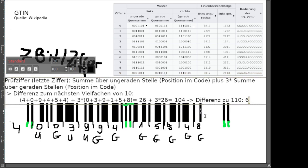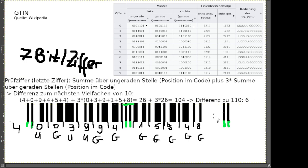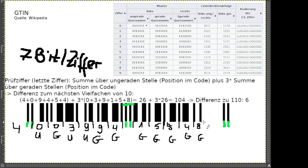Die müssten wir rein formal auch noch eintragen, damit wir einen vollständigen Code haben. Mit der 8 hatte das aufgehört nach drei Nullen, und dann würde hier die Codierung für die 6 kommen. Die Prüfziffer 6 zählt genauso wie alles auf der rechten Seite.